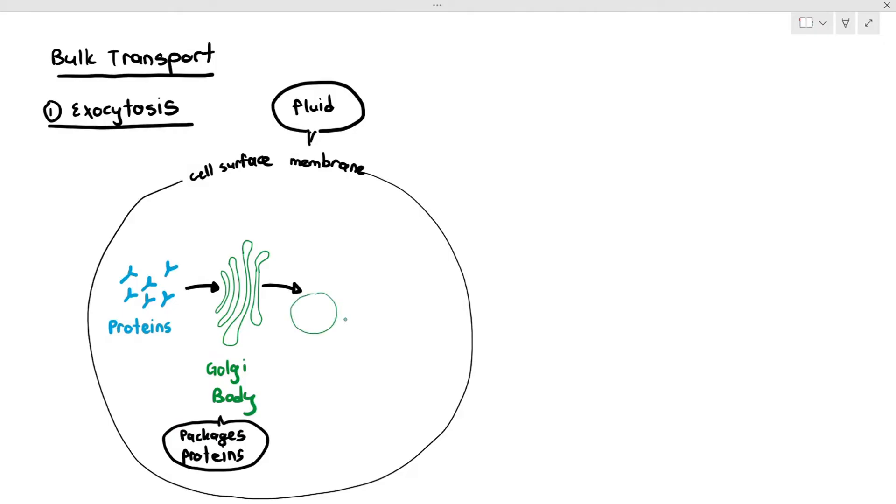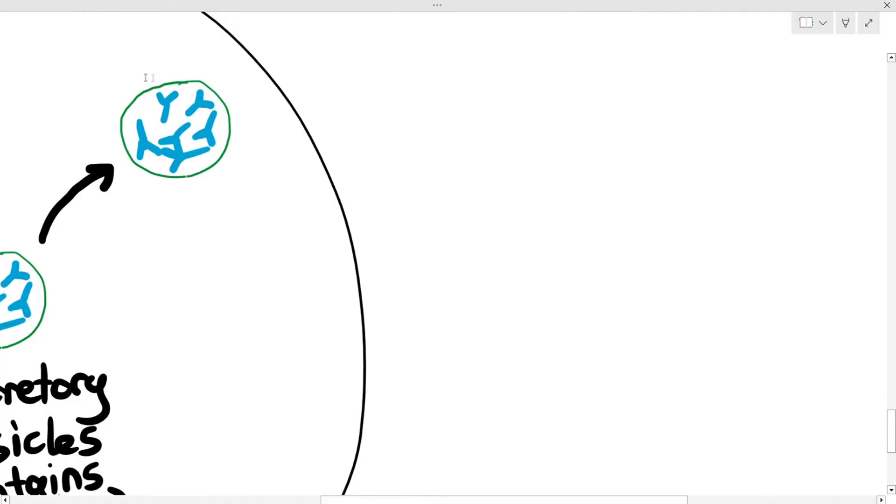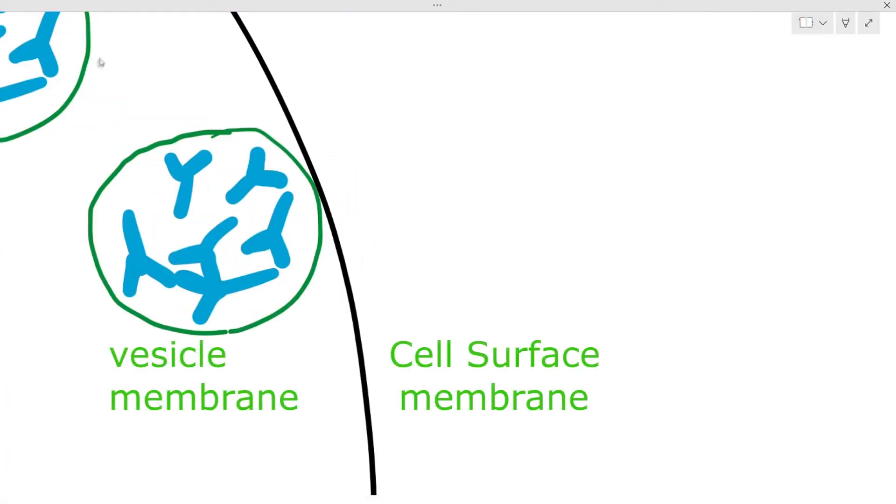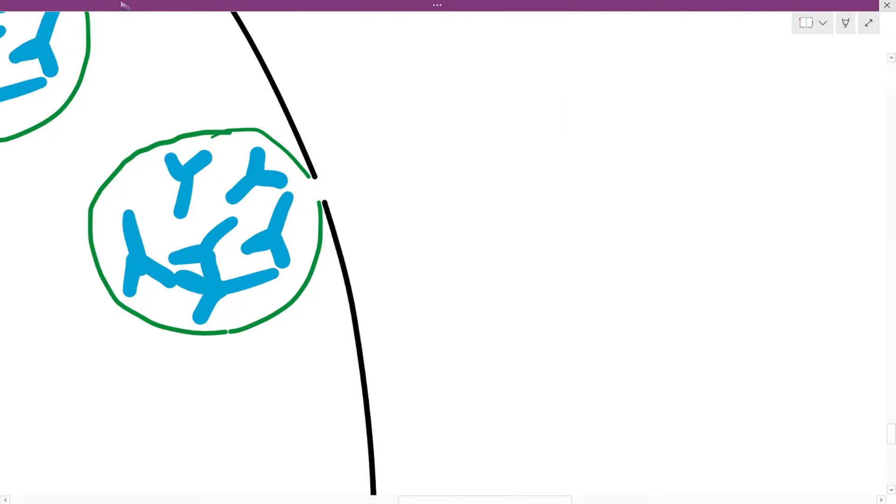What does it mean by packaging the protein? They will put the proteins into vesicles, basically. Once the protein is put inside the vesicle, the vesicle will then move towards the cell surface membrane, as I'm putting over here. And what happens here? The vesicle membrane touches the cell surface membrane. And when it touches the cell surface membrane, something pretty spectacular happens.